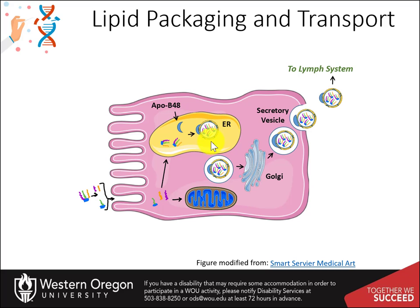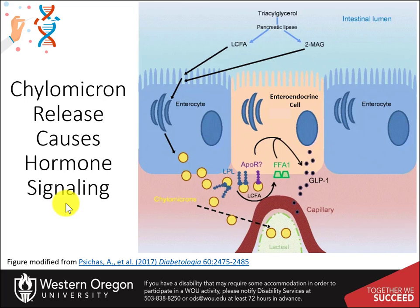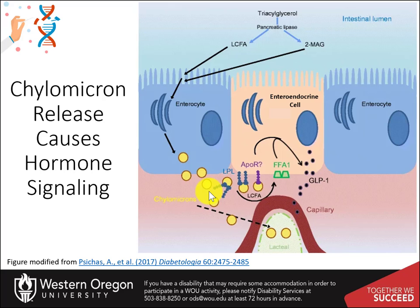Once packaged, the chylomicrons are carried in secretory vesicles to the plasma membrane, where they are released onto the basolateral side of the enterocyte into the lymph system. Lipids are a potent stimulus for the secretion of the peptide hormones glucagon-like peptide (GLP-1) and glucose-dependent insulinotropic peptide (GIP) from the basolateral side of the intestinal epithelial cells. Within the epithelial cells are specialized enteroendocrine cells that can sense lipid concentration. This model proposes a pathway for the release of these gut hormones through the sensing of chylomicron release from the neighboring enterocytes, possibly by direct chylomicron binding.